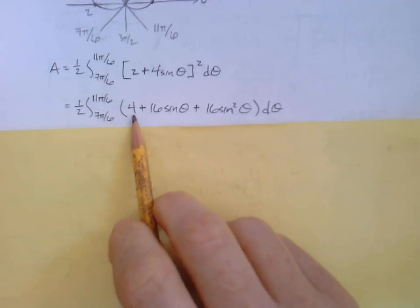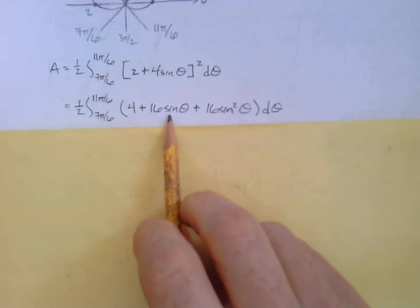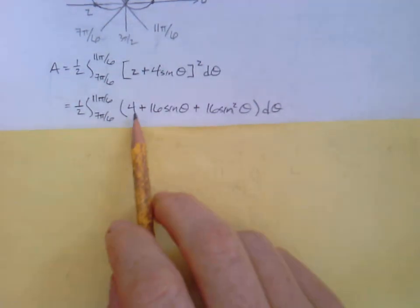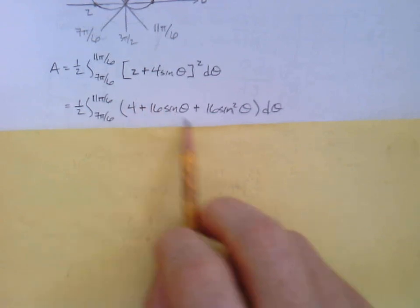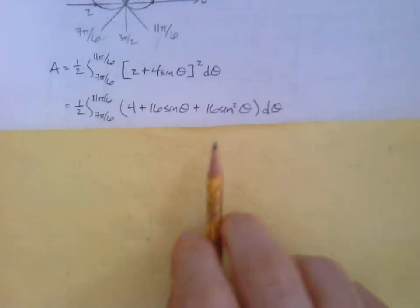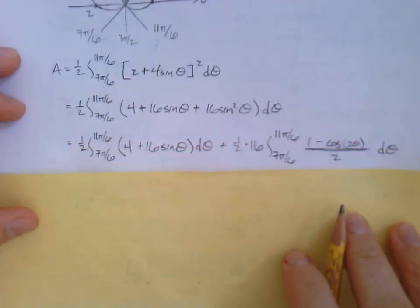And now what? Well, these first two, 4 plus 16 sine theta, they're ready to go. We're ready to take antiderivatives. This one, though, needs the trig identity. So, let's split those apart into separate integrals.